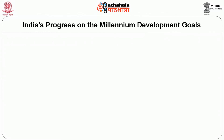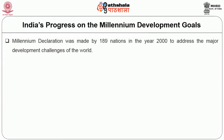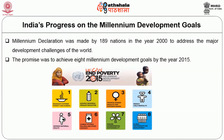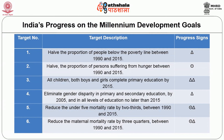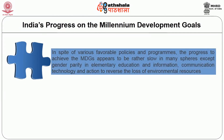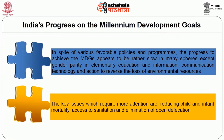The Millennium Declaration was made by 189 countries in the year 2000 to address major development challenges, with a promise to achieve 8 Millennium Development Goals by 2015. India's progress as reflected by UNDP shows that in spite of various favorable policies and programs, progress appears rather slow in many spheres. Except for gender parity in elementary education, information and communication technology, and action to reverse loss of environmental resources, where mild progress is shown, key issues requiring more attention include reducing child and infant mortality, access to sanitation, and elimination of open defecation.